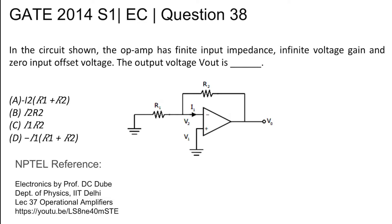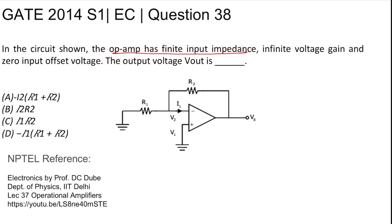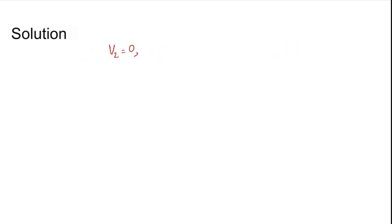The key concept is that when op-amp voltage gain A_V tends to infinity, then V2 equals V1. This phenomenon is known as virtual ground — that is, if V1 is grounded, then V2 will also be at virtually zero potential. So V2 is zero.